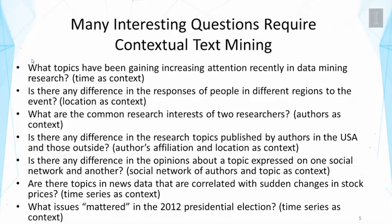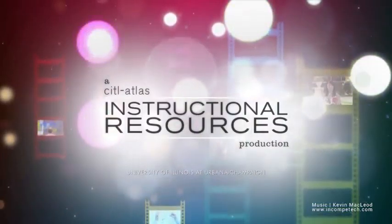What are the common research interests of two researchers? In this case, authors can be the context. Is there any difference in the research topics published by authors in the USA and those outside? Here the context would include the authors and their affiliation and location, going beyond just the author themselves to additional information connected to the author. Is there any difference in the opinions about a topic expressed on one social network versus another? In this case, the social network of authors and the topic can be the context. Are there topics in news data that are correlated with sudden changes in stock prices? In this case, we can use a time series such as stock prices as context. What issues mattered in the 2012 presidential election? Again, time series as context. As you can see, the list can go on and on — contextual text mining can have many applications.